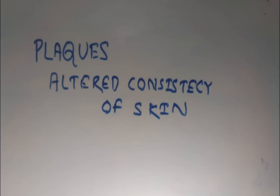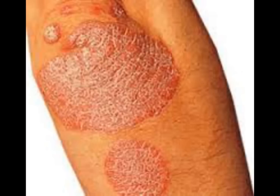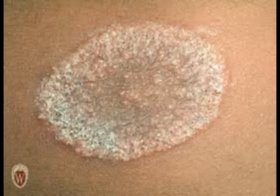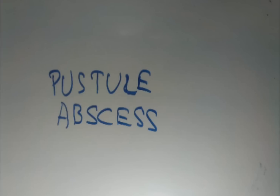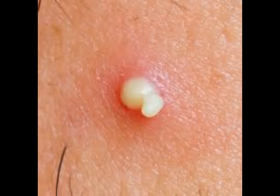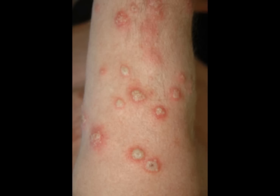Plaques are lesions where skin consistency is changed, and they may be elevated or depressed. They may be described as uniformly thickened or annular (ring-shaped). Pustules are superficial follicular lesions, while abscesses are deep-seated.